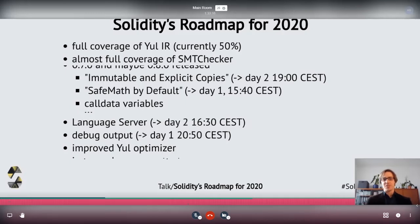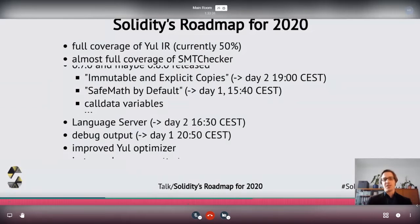Another interesting feature is calldata variables. We already have the calldata location specifier for function parameters of external functions, but there's no real reason why calldata cannot be used for any other variables — local variables and parameters in internal functions. This could yield nice performance improvements because when you have a memory variable and just use it for calldata content, you always need a copy to memory, which could be unnecessary.